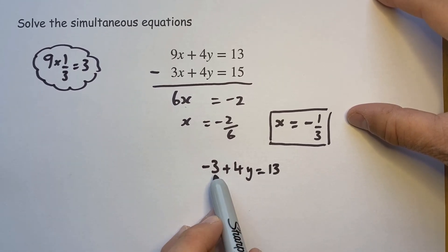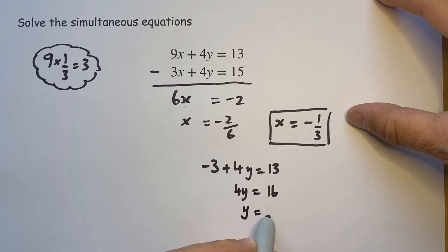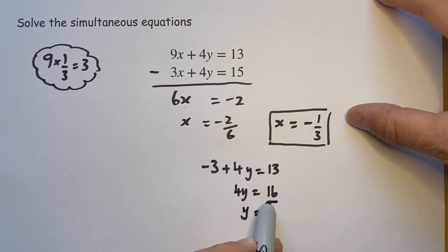So if I pull that 3 onto the side becomes a plus 3, so we get 4y is equal to 16. 16, so y works out to be 4 because 16 is in your 4 times table.